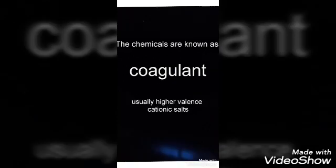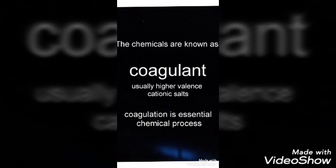In the water, the coagulation is a destabilization process. The coagulation is a chemical treatment plan. We can add coagulant. Usually we use alum, iron, and iron.